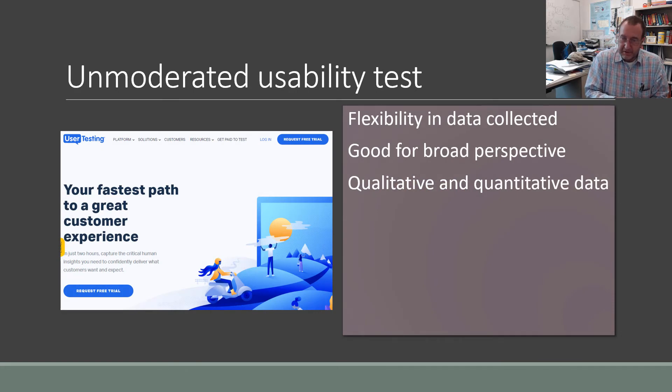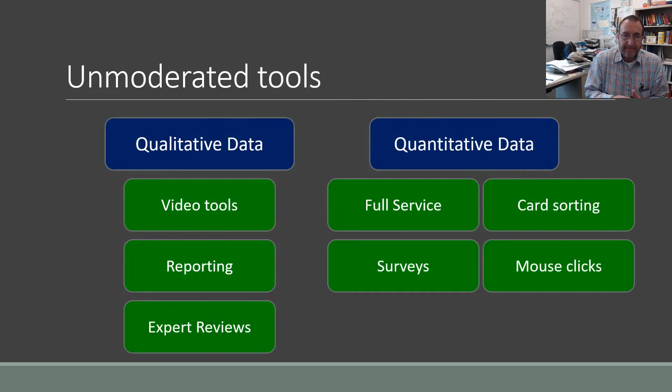You can do an unmoderated usability test where you pass it off to a company that does it for a living. You send your product in. They send it out to their anonymous to you testers and then you get the data back and you can crunch it. These are some more of the unmoderated tools. You can video people. You can ask for their report. You send them a product. They write back how they used it. Or you can send it to experts and they will give a review of it, much like a movie critic.